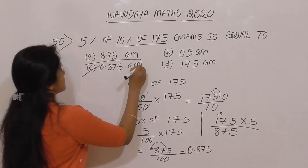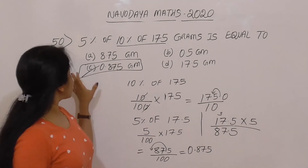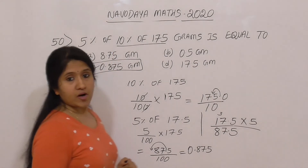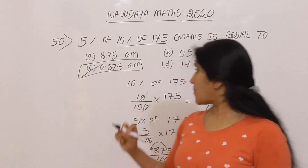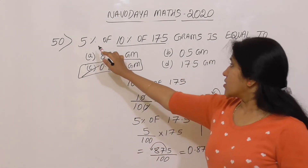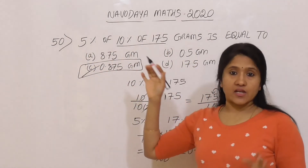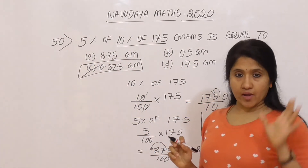Option C is the right answer: 0.875 grams. The key idea is percentage on percentage — multiply the percentages step by step.